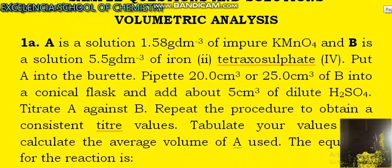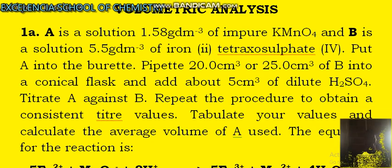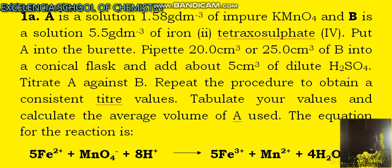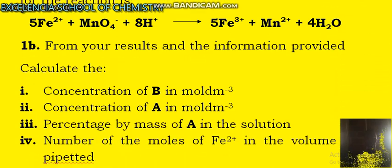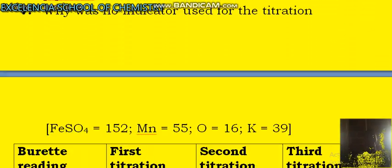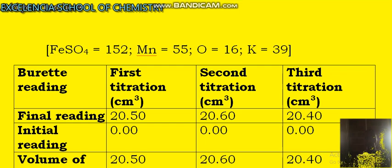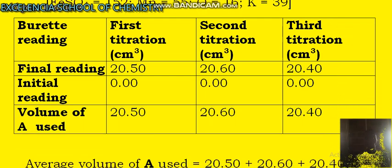A is a solution of 1.58 gpdm³ of impure KMnO₄ and B is a solution of 5.5 gpdm³ of Iron(II) Tetra-oxosulphate(VI). And here we have all the details. For the sake of time, you wouldn't read them line after line. We have the equation for the reaction here and we have the table. This is the titration table.